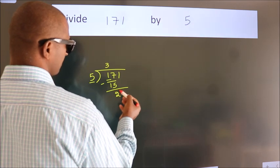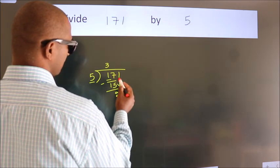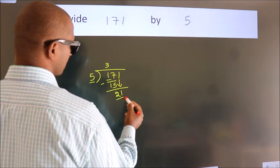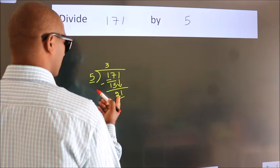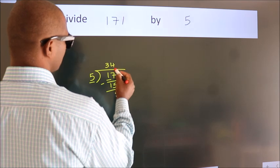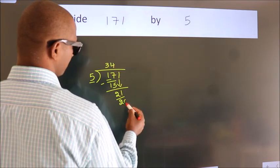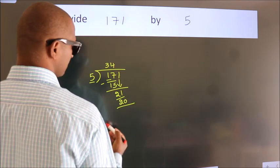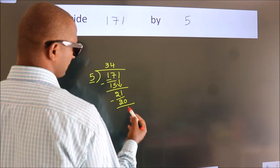After this, bring down the next number. So 1 down, giving us 21. A number close to 21 in the 5 times table is 5 times 4, which is 20. Now we subtract. We get 1.